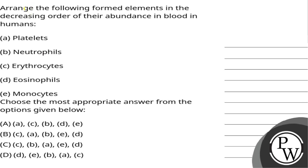Hello Bacho, let's see the question. Arrange the following formed elements in decreasing order of their abundance in blood in humans: (a) Platelets, (b) Neutrophils, (c) Erythrocytes, (d) Eosinophils, and (e) Monocytes. Choose the most appropriate answer from the options given below.